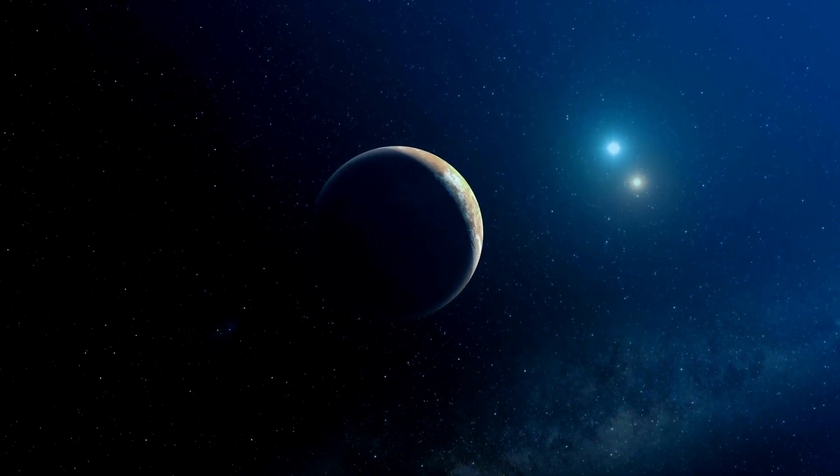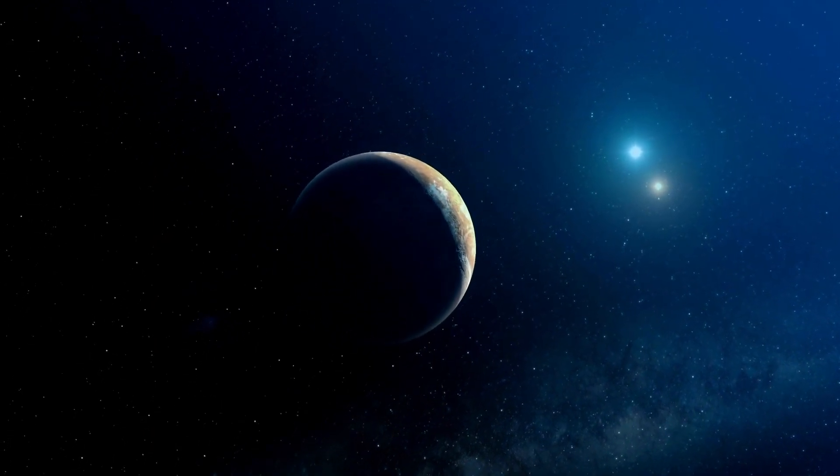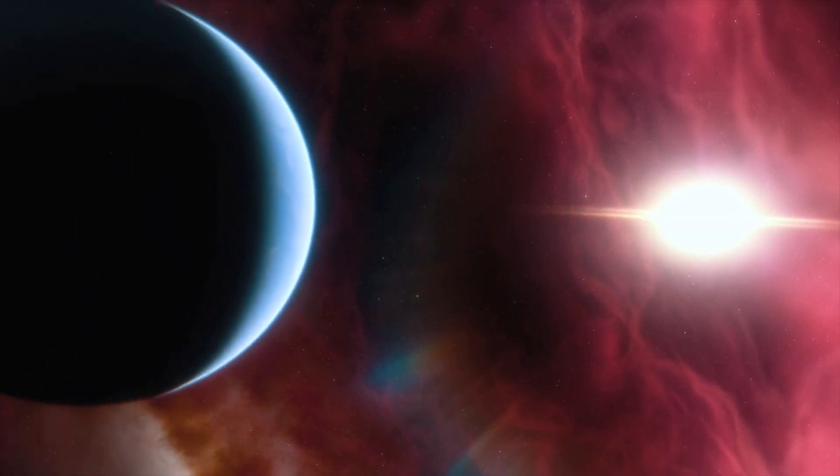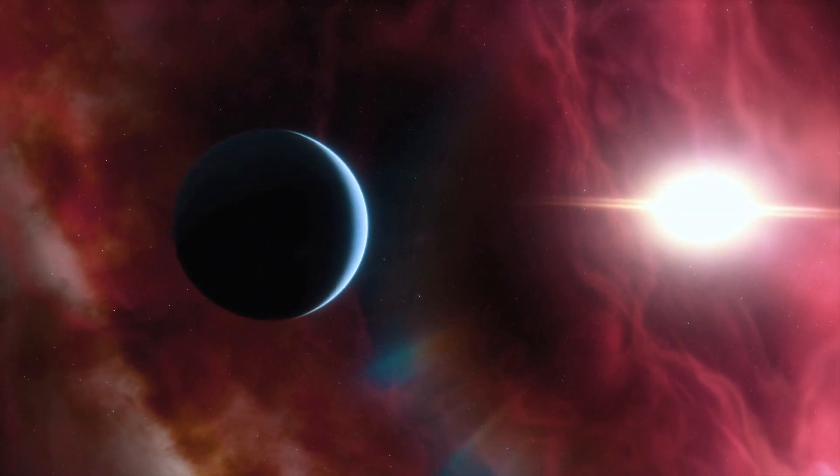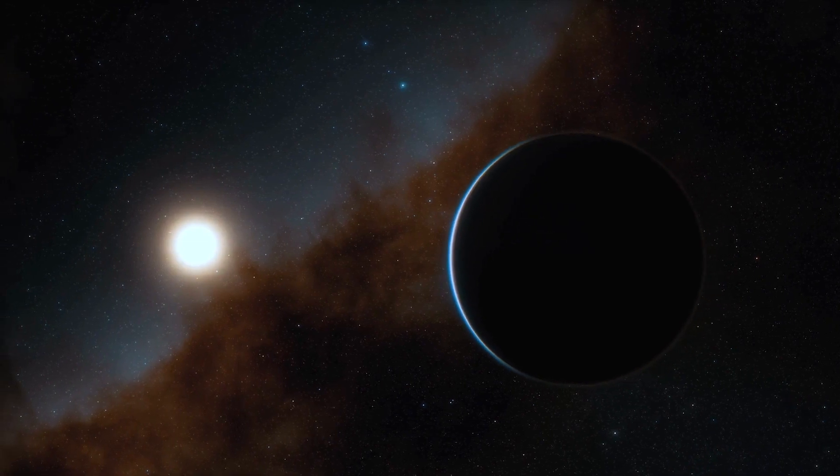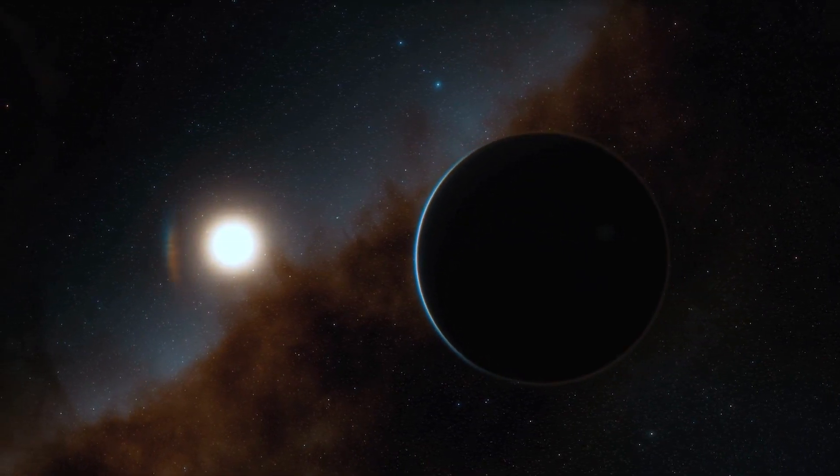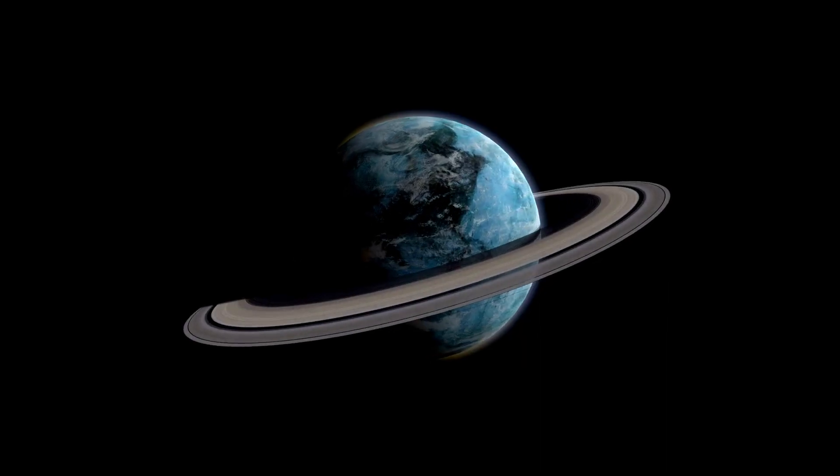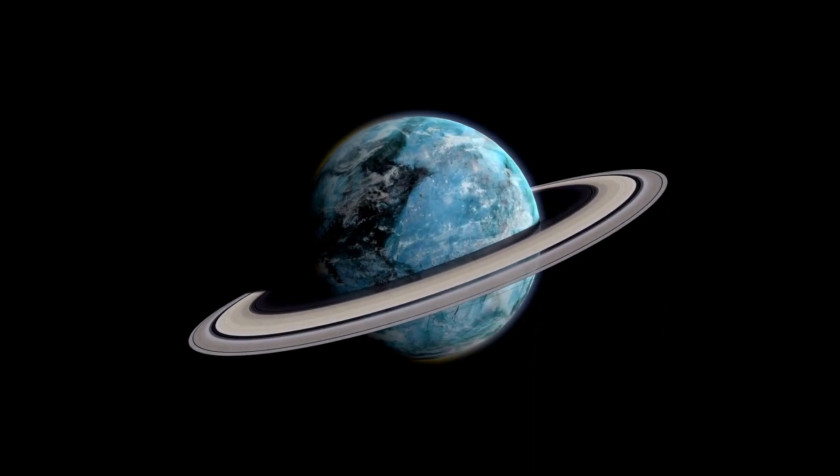But that's not all. Our cosmic neighborhood is more crowded than you could possibly imagine. To date, there are 5,241 confirmed exoplanets, worlds that exist outside our solar system, from gaseous giants larger than Jupiter to rocky worlds akin to our Earth, these distant worlds are a testament to the diversity of the universe.